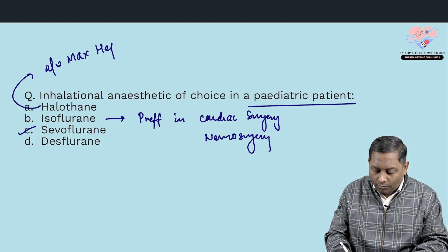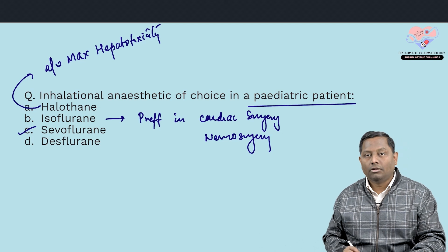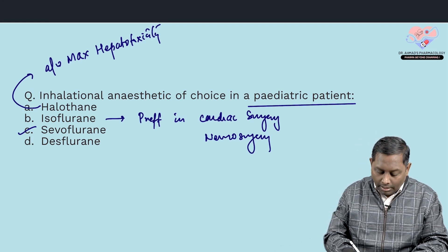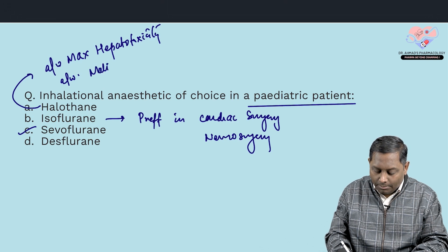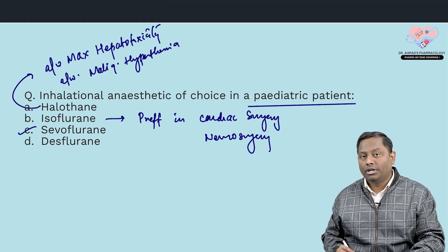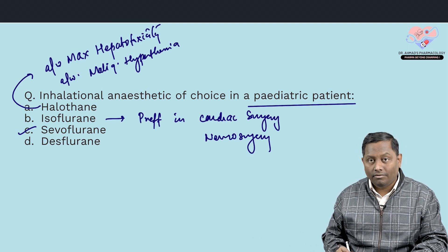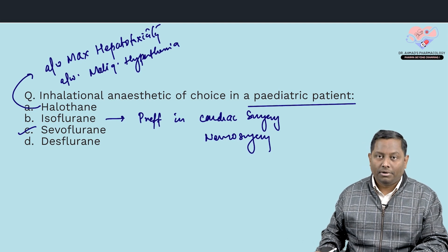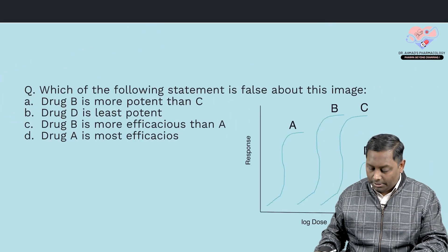Halothane is mainly associated with the maximum risk of hepatitis — known as halothane hepatitis. Halothane can also be associated with malignant hyperthermia. Key takeaway: for pediatrics, sevoflurane is preferred as it is less pungent and easily administered.